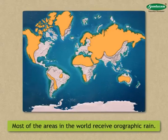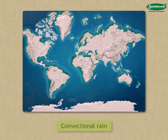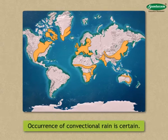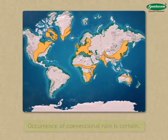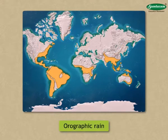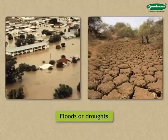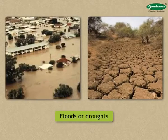Most of the areas in the world receive orographic rain. Convectional rain is regional in nature. In the equatorial region, occurrence of convectional rain is certain. Orographic and cyclonic rains are not so dependable. That is why regions which receive this type of rain sometimes have to face calamities like floods or droughts.